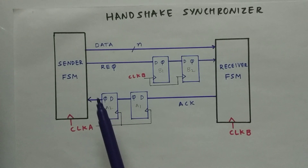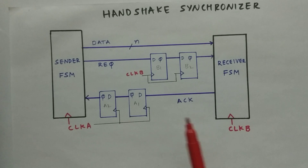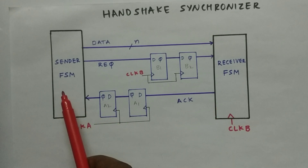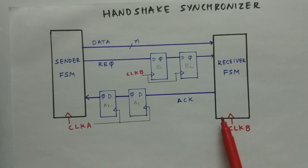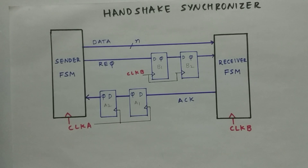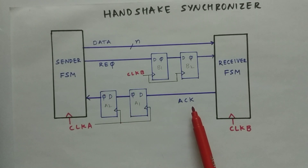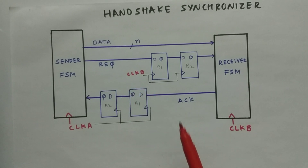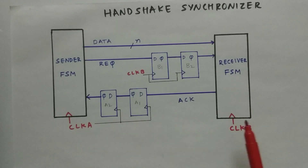As you can see, we have a basic diagram of a handshake synchronizer. We have two state machines: a sender state machine running on clock domain A, and a receiver state machine running on clock domain B. To synchronize them, we use a request and acknowledgement mechanism. The request and acknowledgement signals guarantee that the sampling of data is correct across the two clock domains.